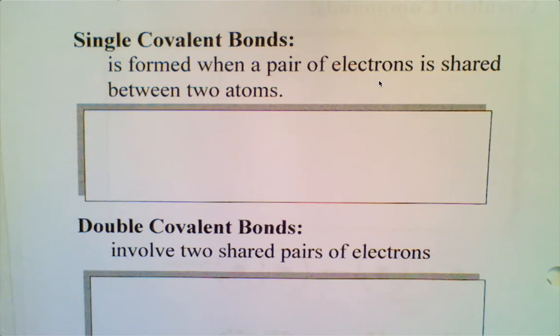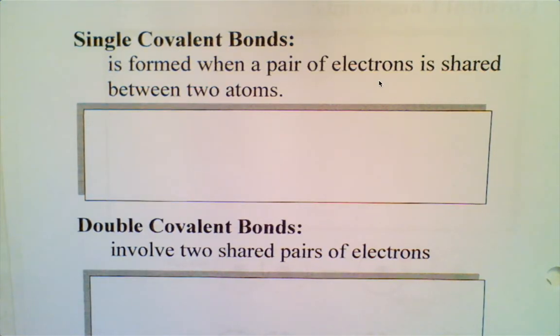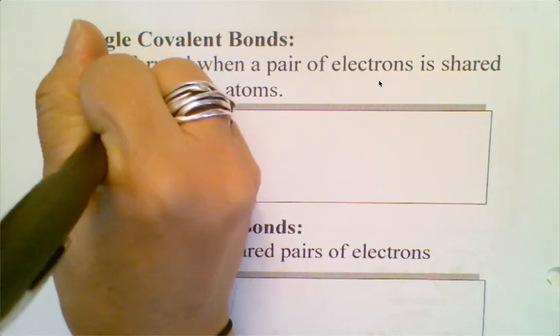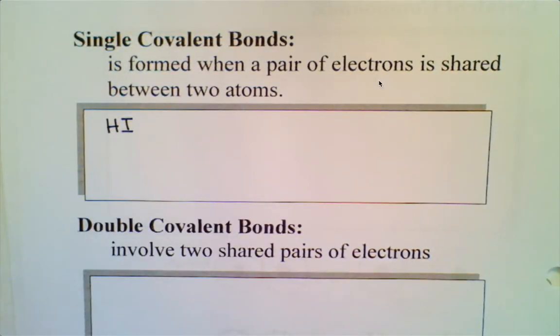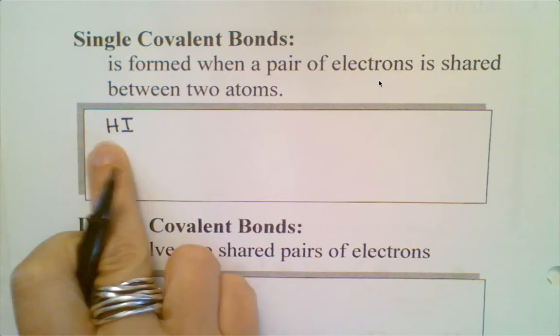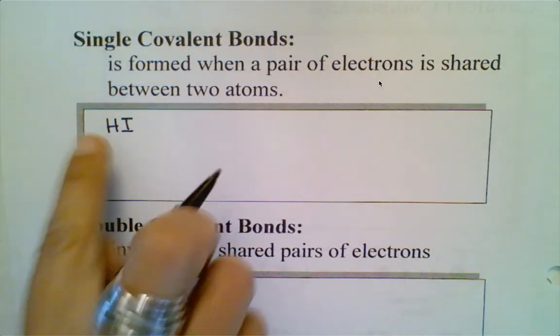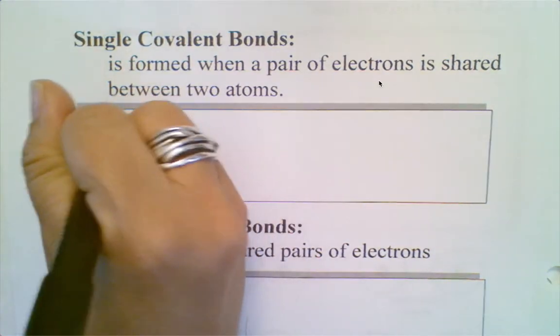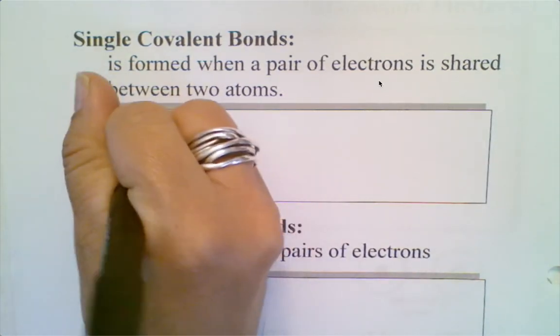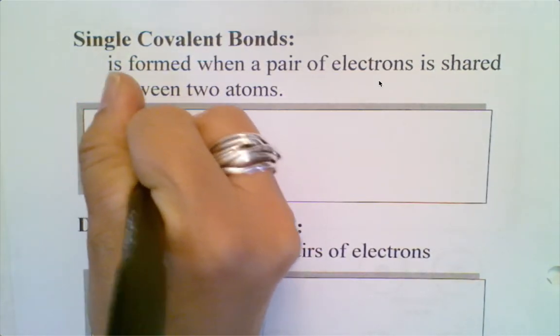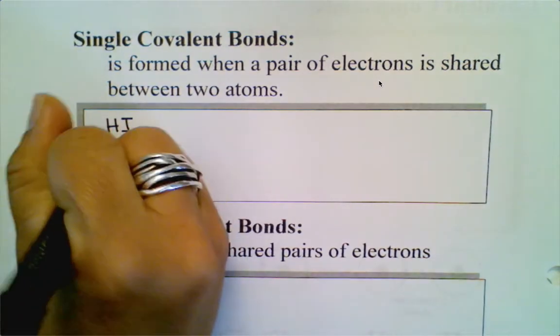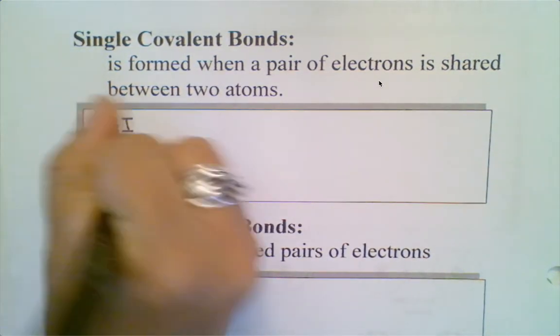The first one that we're going to do is a single covalent bond and we're going to draw hydrogen iodide, and the formula for that is HI. When you go to draw this, you count up the number of valence electrons for each. Hydrogen is in the first family so it has one electron, and iodine has seven electrons. That gives me a total of eight electrons to work with.